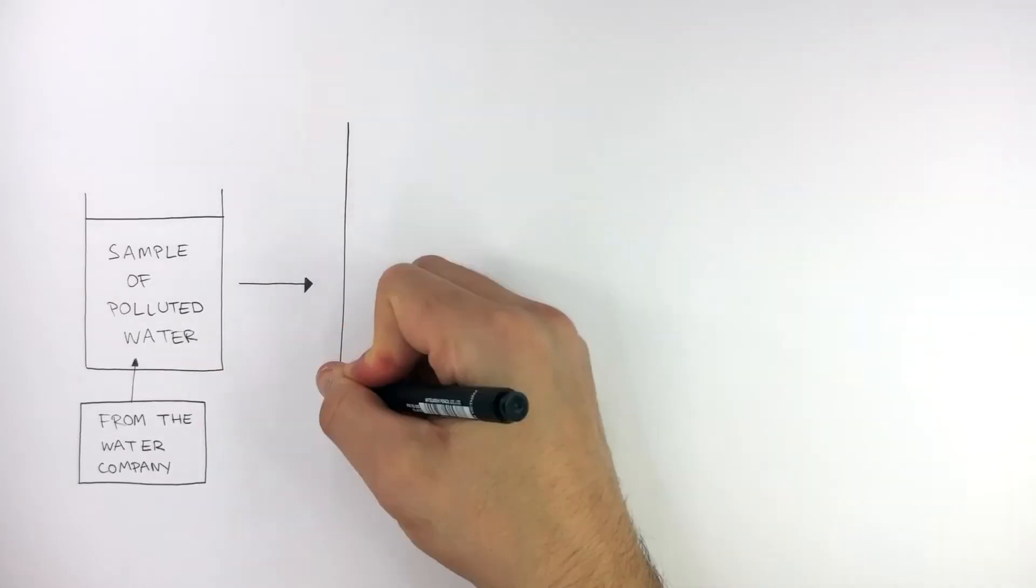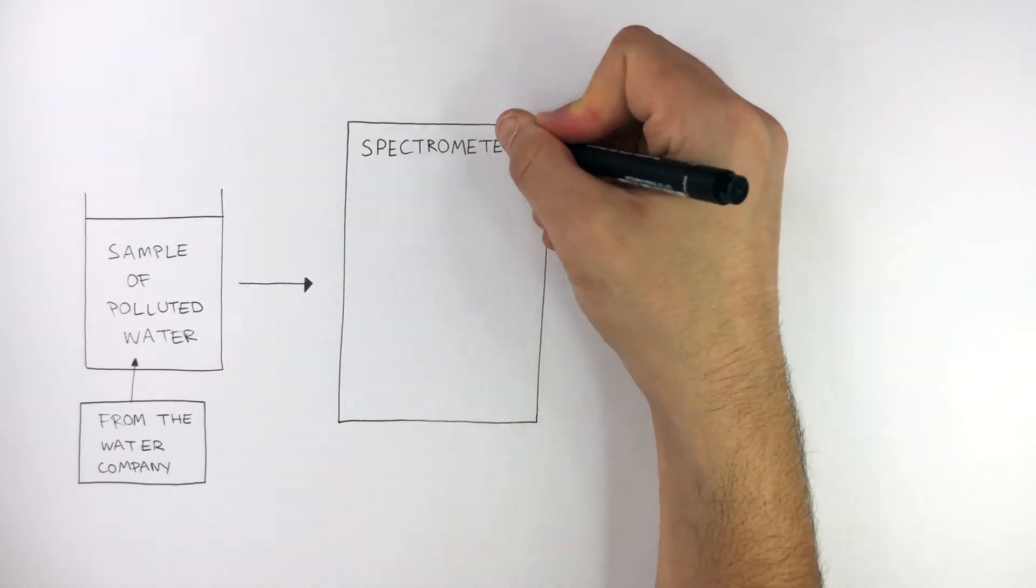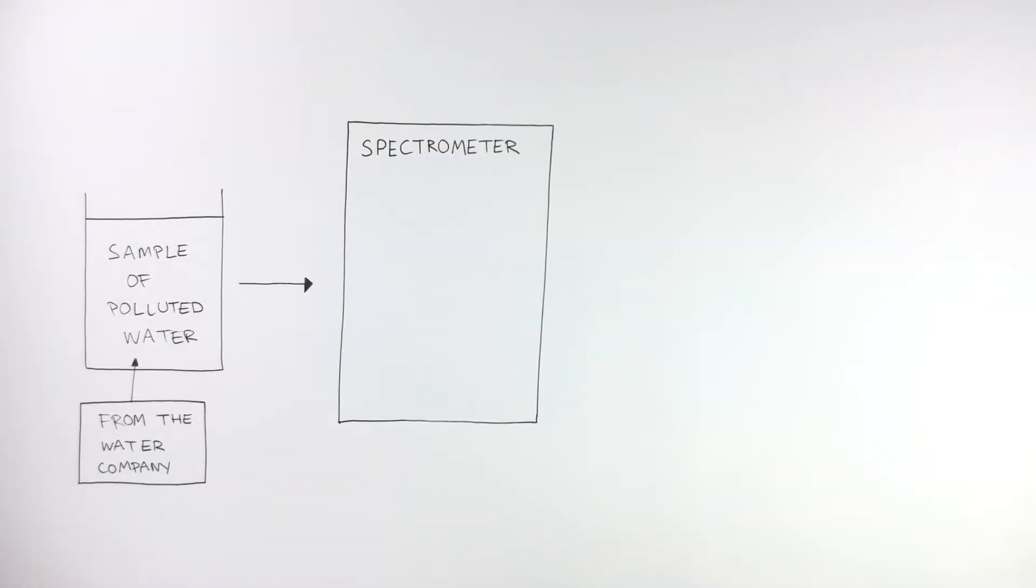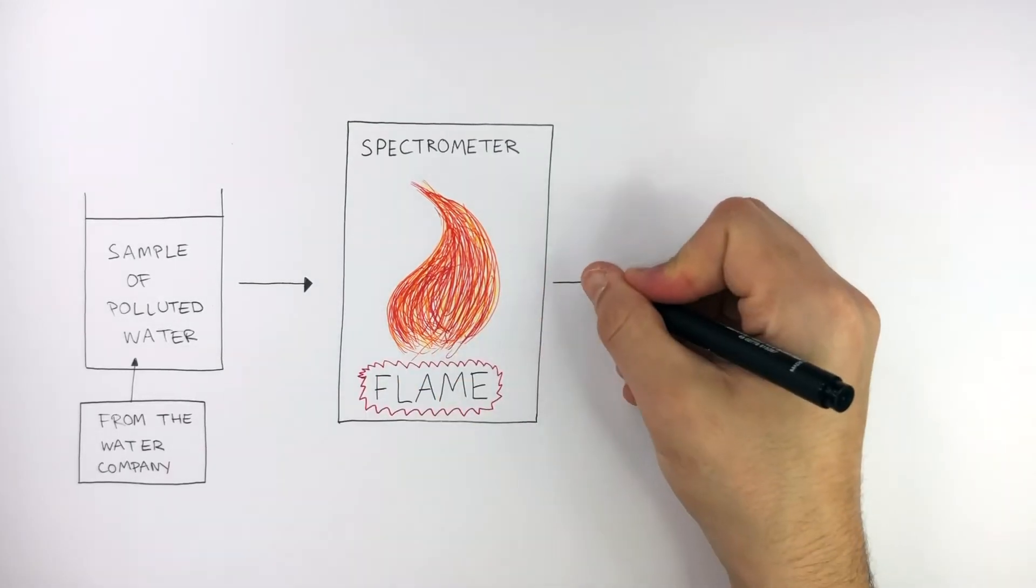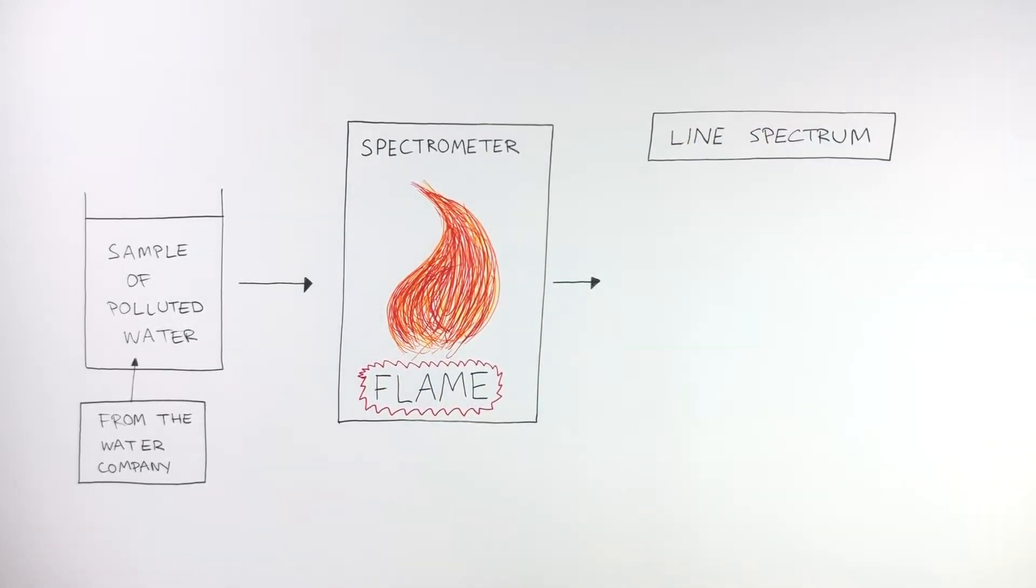This sample of polluted water can be placed in a spectrometer, and when heated in a flame, a line spectrum is produced.